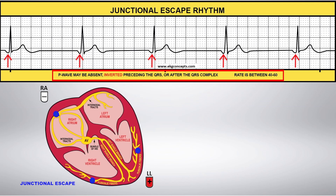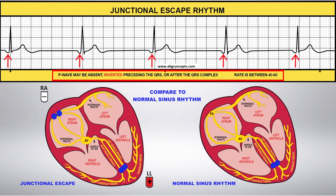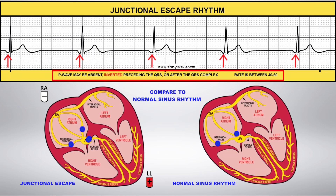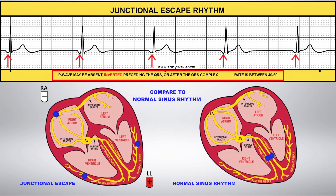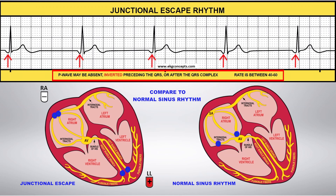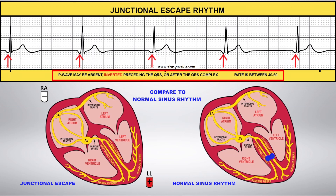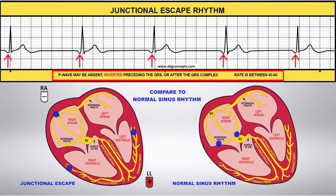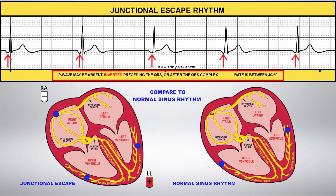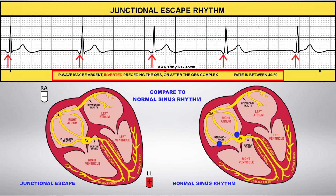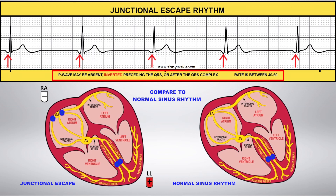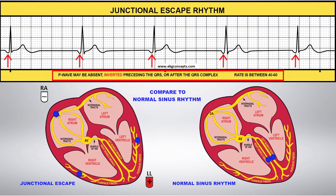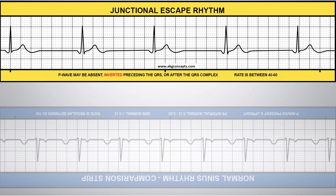Compare this to normal sinus rhythm. If the atria and ventricles are depolarized simultaneously, the P wave can be hidden or buried in the QRS complex. If the ventricles are depolarized before the atrium, the P waves will appear after the QRS complex.